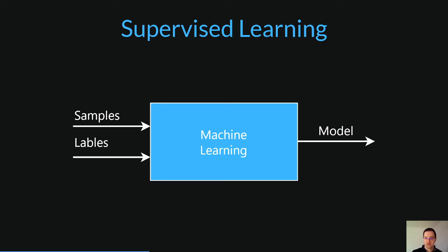Supervised learning helps organizations to solve for a variety of real-world problems at scale, such as classifying spam in a separate folder from your inbox. The input dataset is generally called samples and the output is called labels. As a result, you get a trained model.